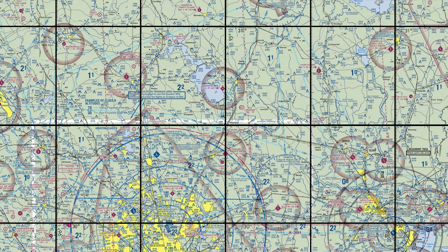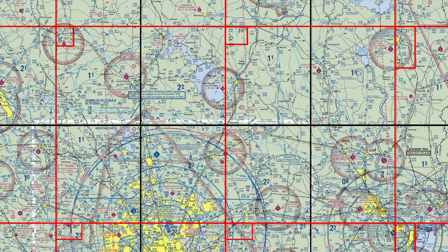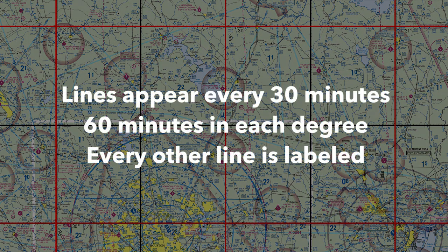Note that the lines of longitude increase in value as you move to the west, and that lines of latitude increase in value as you move to the north. Because of the way the quadrants are laid out, every single quadrant will have the lat and long labels on one of its corners. If you can find that, you can count out the coordinates for any point within the quadrant. Remember that lines appear every 30 minutes, there are 60 minutes in each degree, and every other line is labeled.